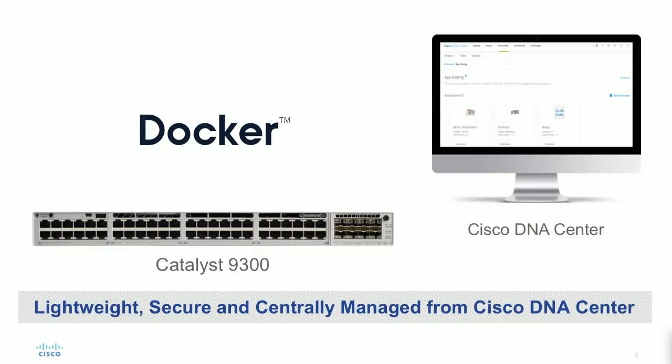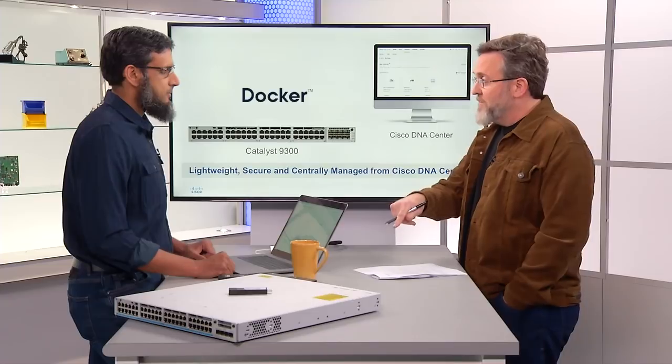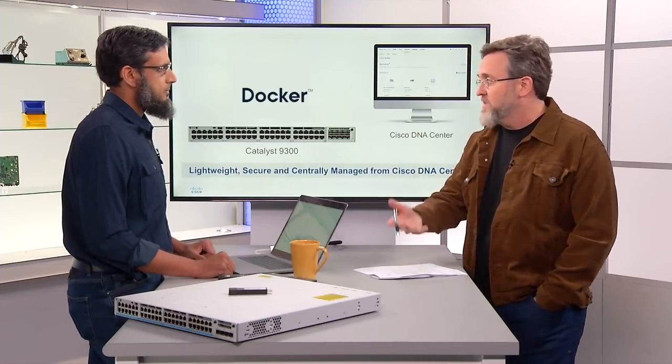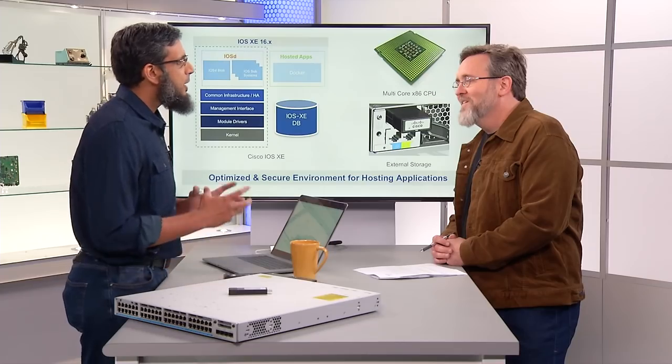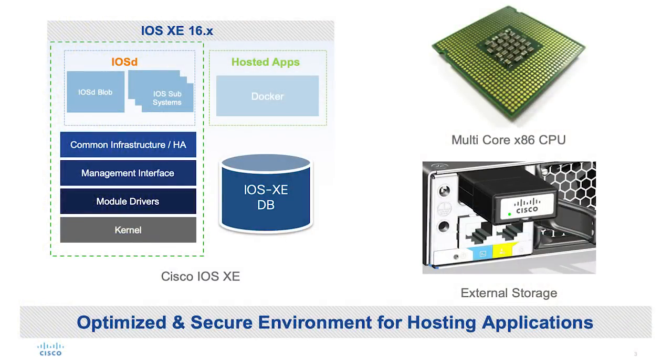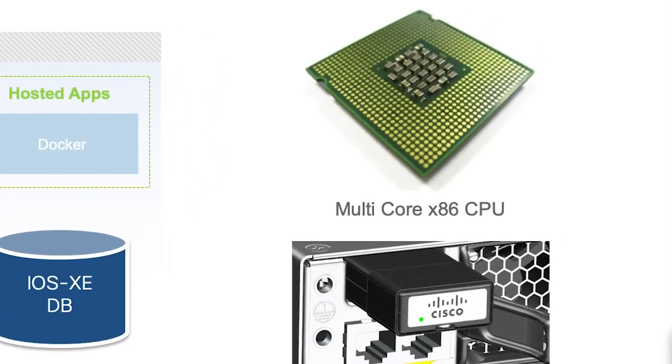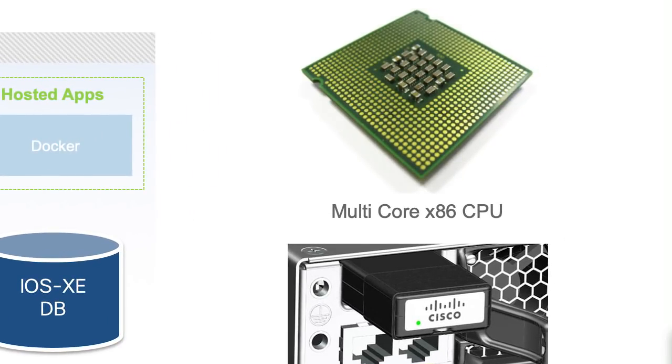Our one command center — Cisco DNA Center — is going to be the orchestration tool for application hosting as well. The foundational elements of the Catalyst 9000 are powerful: we have the UADP ASIC, IOS XE which is a modernized and flexible operating system, and an x86-based CPU across most of the Catalyst 9K family. Those are the elements that really make application hosting possible from an architecture perspective.